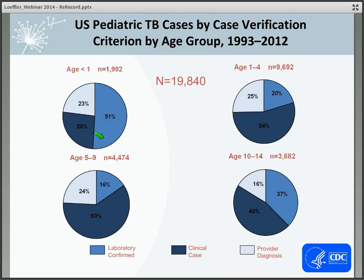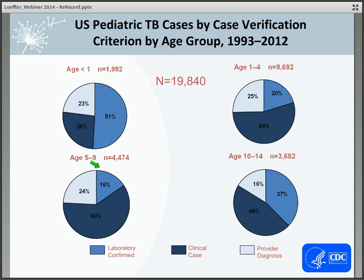A breakdown by age group shows that for children less than one year, about half are diagnosed because they have a positive culture — little babies have very high yields from the gastric aspirate specimen. In the toddler and school-age years, relatively fewer children have laboratory confirmation, largely because fewer have gastric aspirates collected and the yield is lower. When you get to older school-age kids, ages 10 to 14, the laboratory confirmation rate goes up again, because these children, when properly coached and perhaps given induction, can produce sputum specimens with good yield.